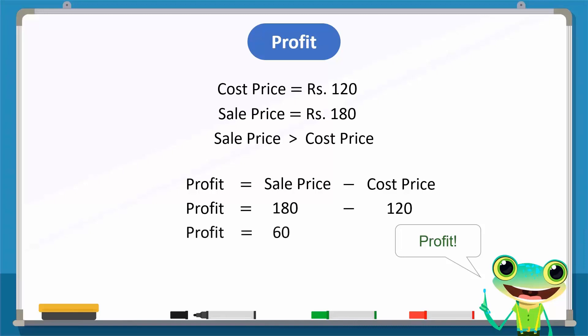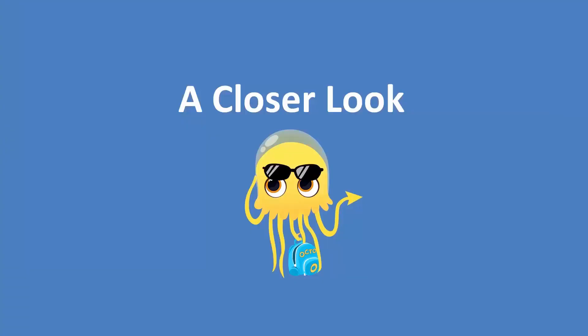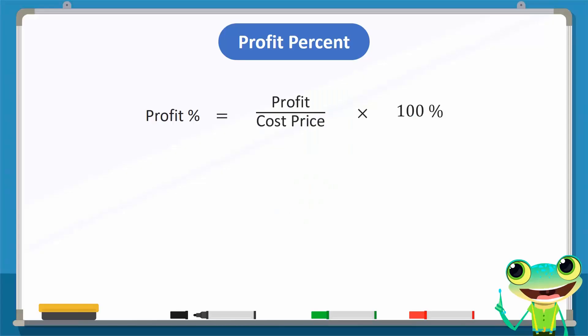We can show his profit as profit percent. Let's see how. To calculate the profit percent, the profit is divided by the cost price and then multiplied by 100%.